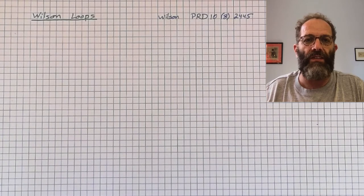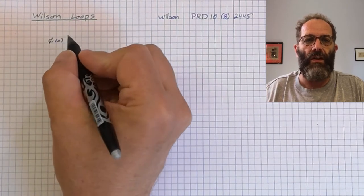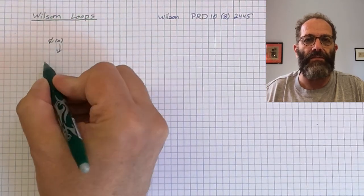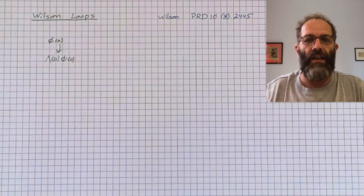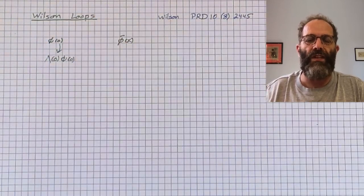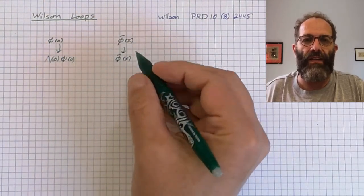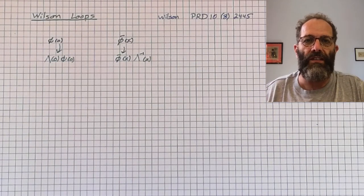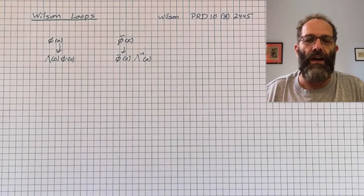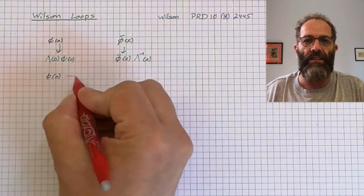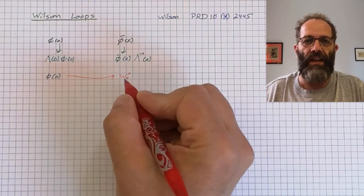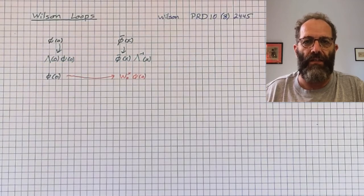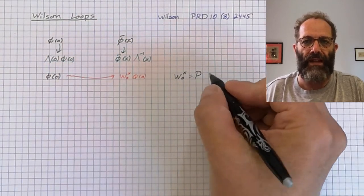It transforms under gauge transformations to lambda times phi. If you have the conjugate at position x, it will transform with the inverse of lambda on the right, lambda evaluated at point x. To compare the two, you would need to parallel transport phi from the origin to position x. And to do that, use the open Wilson line W0x, defined as follows. This depends on the path.